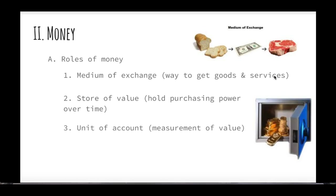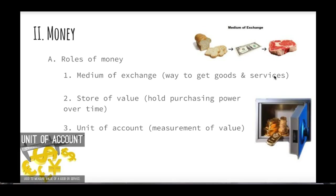Money also has to have what we call a unit of account — it has to have a measurement of value so you can understand what something costs. For example, I have some really heavy bookends I got at a Renaissance festival for $20 — two of them together. When I tell people I spent $20 on these big rocks, people look at me like I'm crazy. Why? Because you understand what the value of $20 is. However, if you check out other bookends, you might find that my $20 bookends are actually quite cheap. Money is a unit of account — when I say something costs $20, you understand what that means.